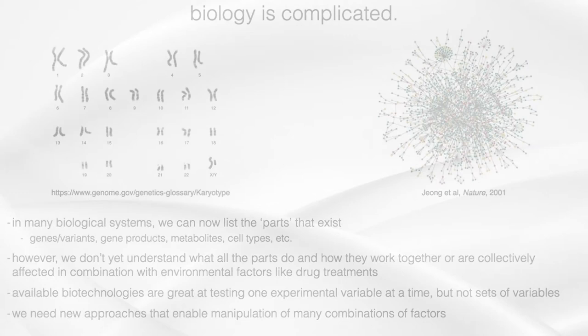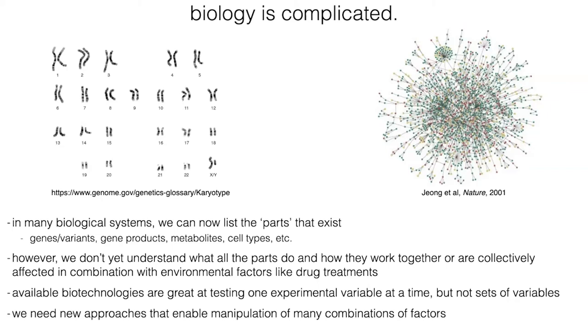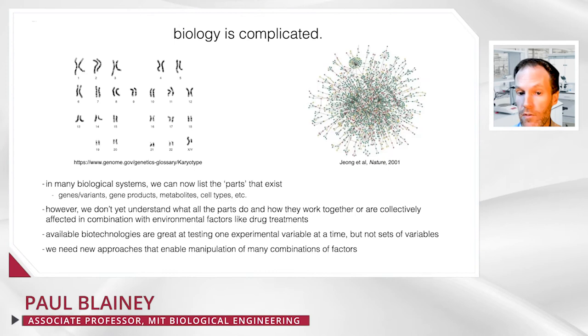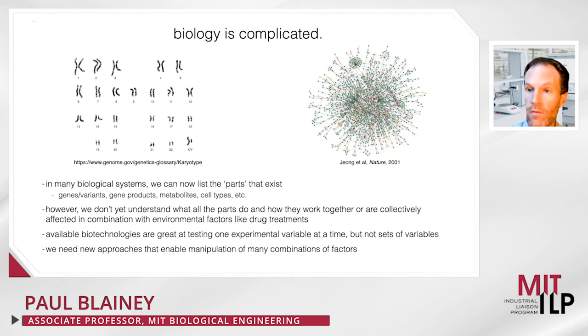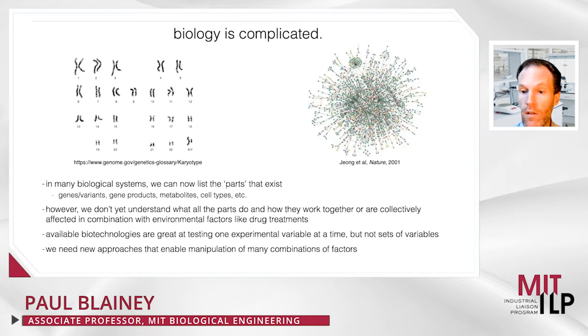I want to start with just a few disclosures before I get into the talk so that everyone can see those. I'll start by noting how complex biology is. It's a real triumph of modern biological research that for so many biological systems, we can now identify most of the parts that comprise them. However, we don't yet understand what all those parts do or how they work together in order to support the function of a cell or an organism. And that extends to the influence of environmental factors and drug treatments. Our powerful biotechnologies are typically at their strongest when we're testing one experimental variable at a time, not the large sets of variables needed to untangle all these interactions.